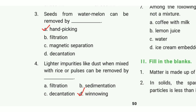Third one: seeds from watermelon can be removed by? The answer is option A, hand picking. Fourth one: lighter impurities like dust mixed with rice or pulses can be removed by? The answer is option D, winnowing.